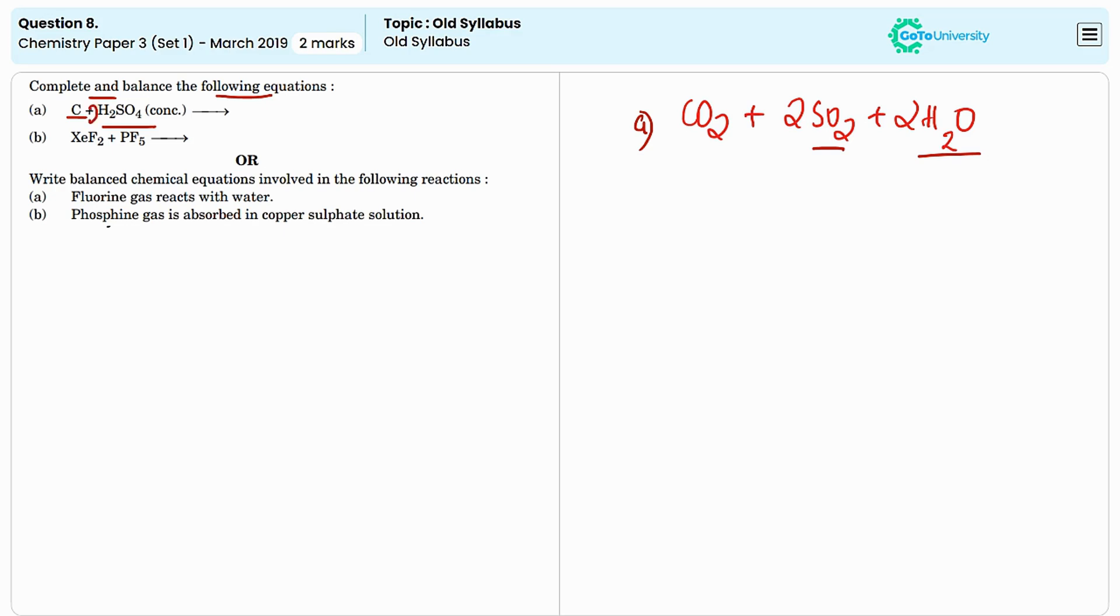For the reactants, we need to add 2 - that is, 2 sulfuric acid molecules are needed to produce 2 moles of sulfur dioxide.